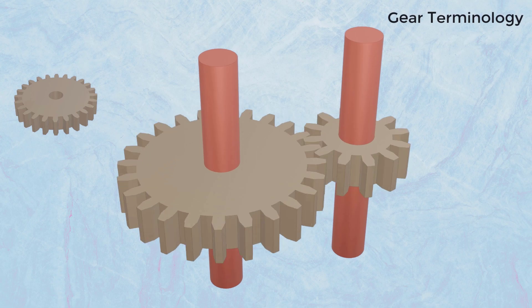Gear Terminology. A gear is a machine element that meshes with other gears to transmit power from one shaft to another.